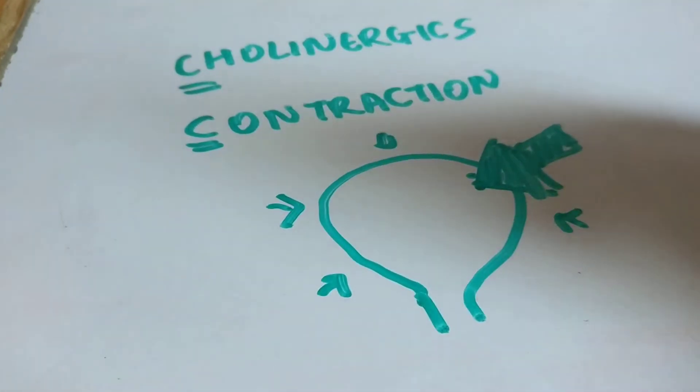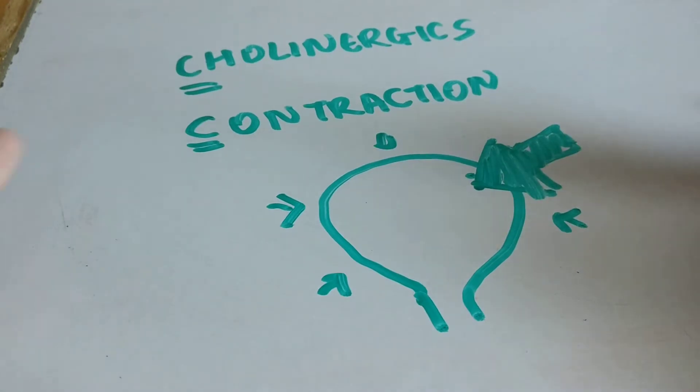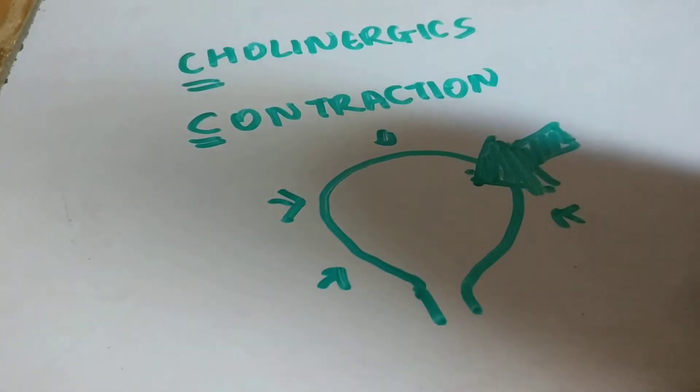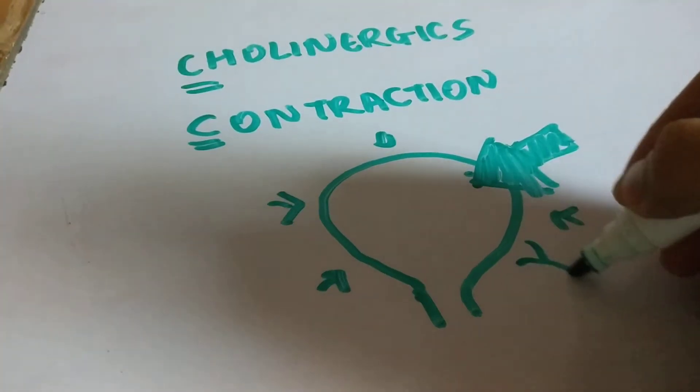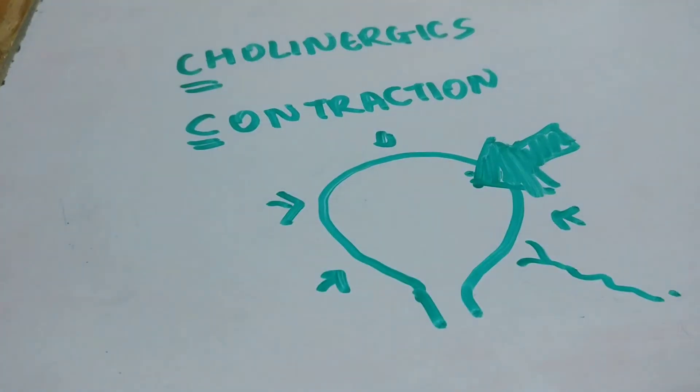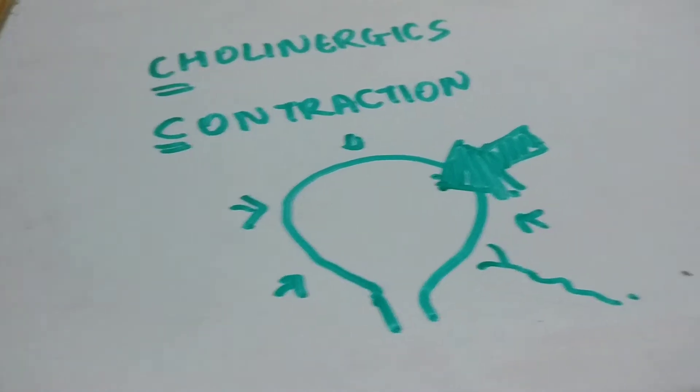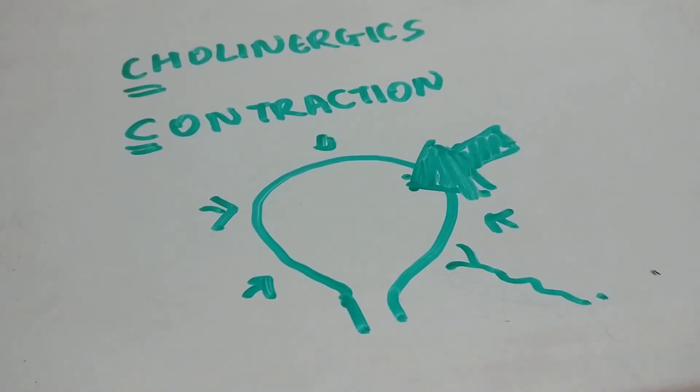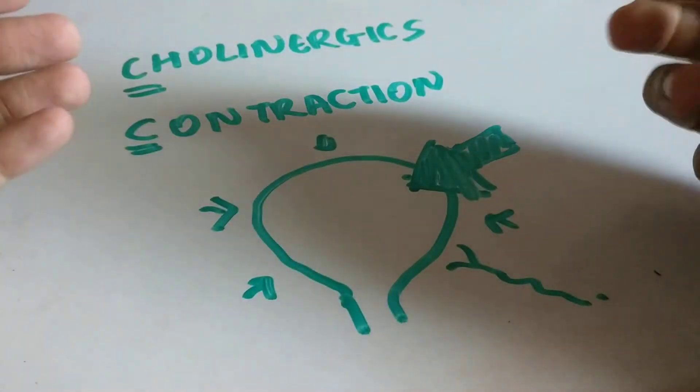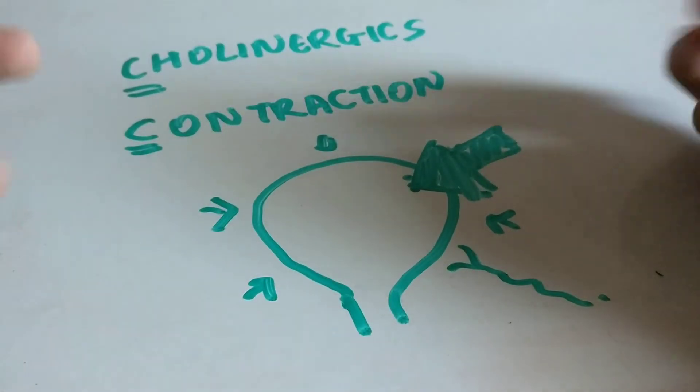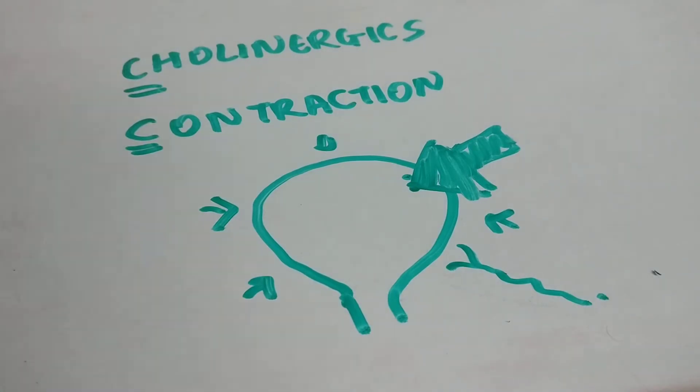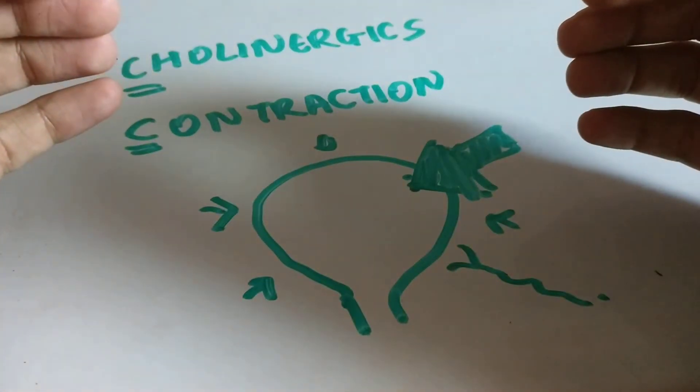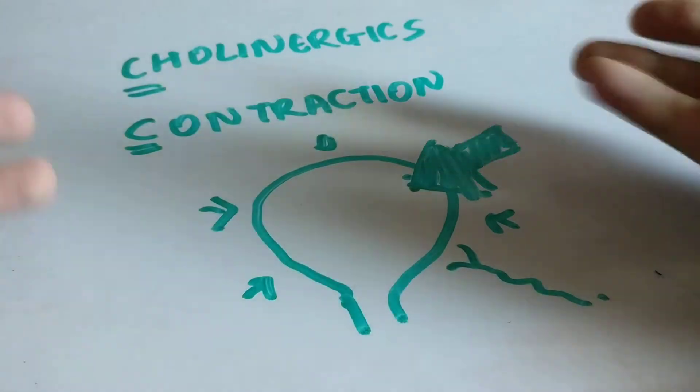In which condition would you actually use a cholinergic drug? In diabetes mellitus, there is denervation of the bladder, so the bladder isn't going to contract like it should. That's why you can give cholinergic drugs. Also in diabetes, there is an absence of the sensation of bladder fullness.